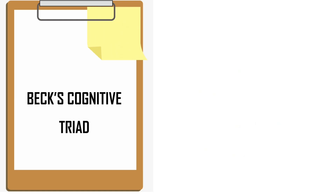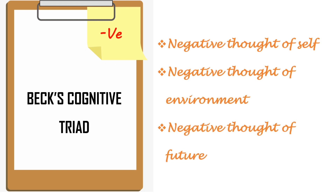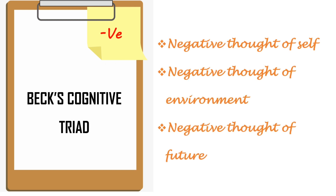Next: Beck's cognitive triad. The persons will have negative thoughts about self, negative thoughts about environment, and negative thoughts about future — so self, environment, and future.